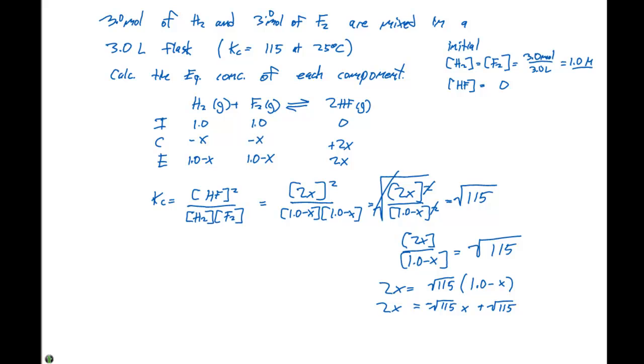If we put everything on the same side of the equation, we can say that 2x—sorry, 2x plus the square root of 115 x equals the square root of 115. We can easily solve this when we add these together on our calculator, and we find that x equals 0.968.